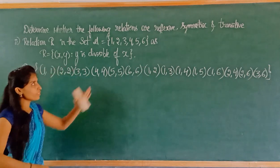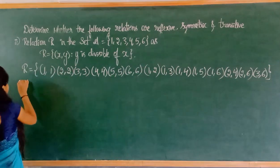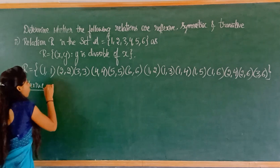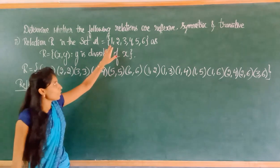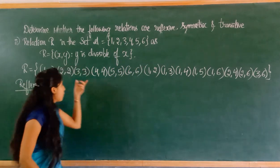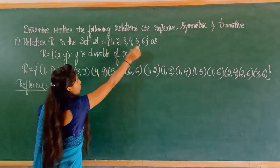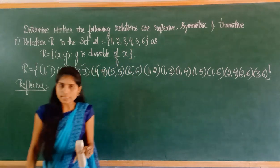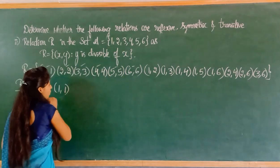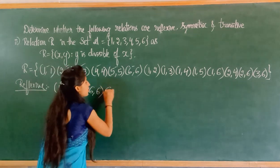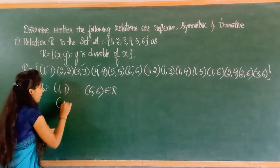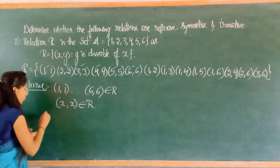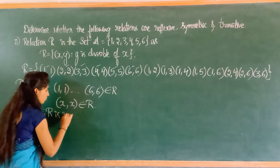Now we will check reflexive, symmetric, and transitive. For reflexive, all elements of set A should have a double pair. Here all elements 1 through 6 have double pairs: (1,1), (2,2), (3,3), (4,4), (5,5), (6,6) all belong to this relation. So (x, x) belongs to R. Therefore, R is reflexive.